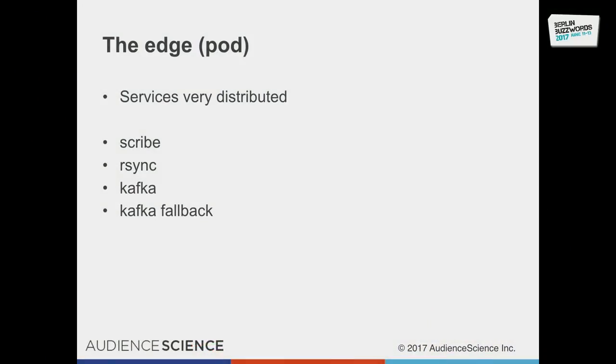Let us start with the edge. We have up to 1,000 VMs which produce logging data — sometimes billing relevant, sometimes not. As we started with all this in 2011, we started with Stripe, a Facebook project for streaming. Stripe is very stable, but we ran into scalability issues because you have only one connection between client and server, and over high-latency lines this doesn't scale with more and more traffic. The next approach was to compress the files using Lsync, which helped with compression, but maintaining all that Lsync infrastructure and achieving sufficient parallelism was a pain.